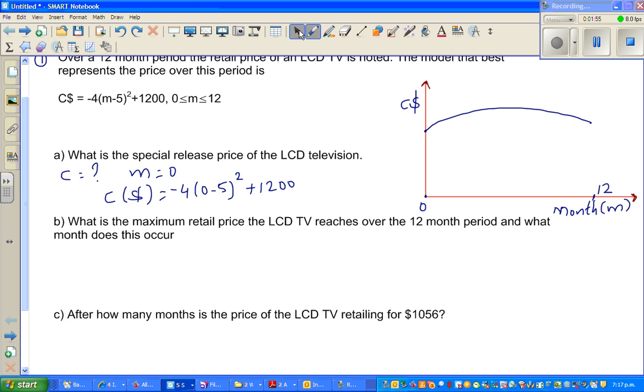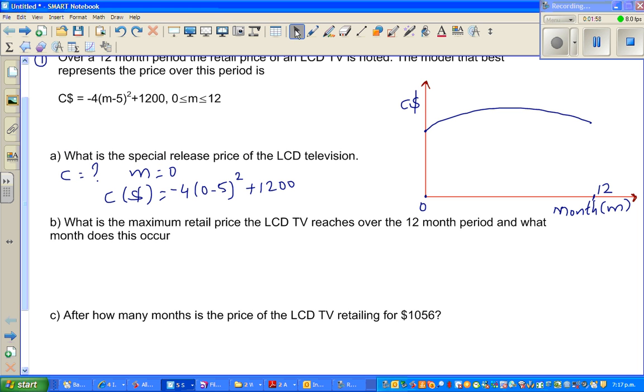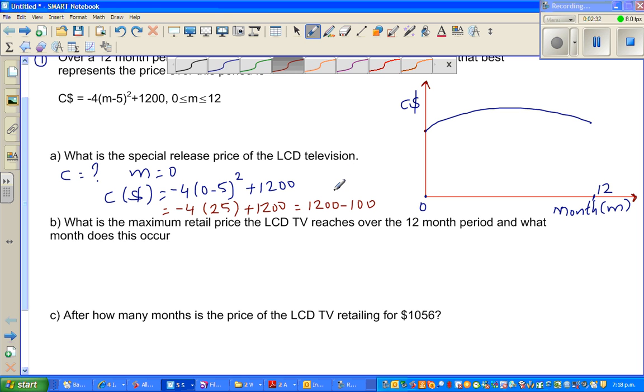So they're asking what is C when m is zero. C in dollars would be minus 4 times 0 minus 5 squared plus 1200, which equals minus 4 times 25 plus 1200, which is minus 100 plus 1200, which is 1100. So the release price is $1100.